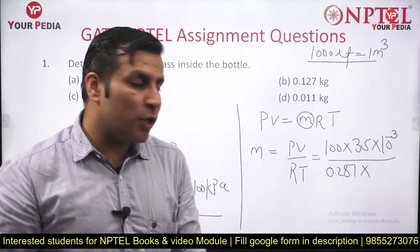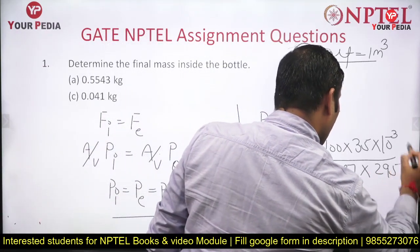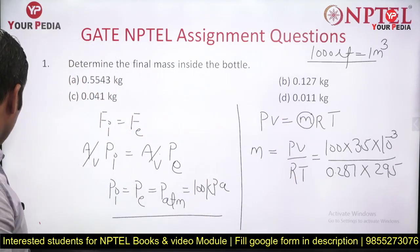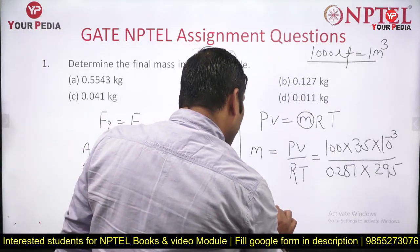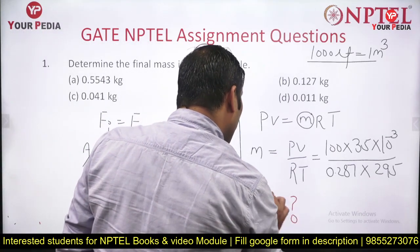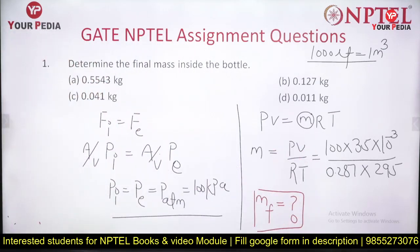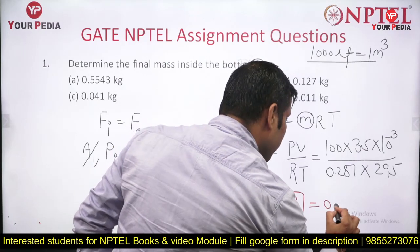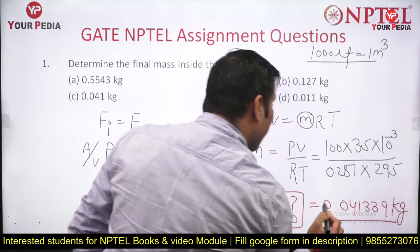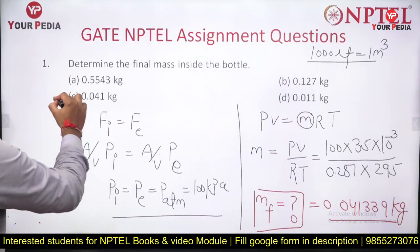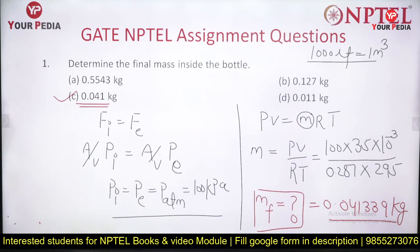Carrying out the calculation with all data known, the final mass comes out to 0.041339 kg. This is also the mass which entered since initial mass was zero. The correct answer for this question is option C: 0.041 kg — this is the final mass inside the bottle.